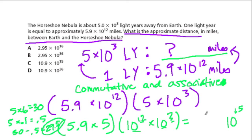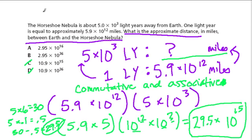So we have 29.5 × 10¹⁵. That's the distance. But notice we don't have that option anywhere here. So it's either going to be A or B, right? C or D. And they want to write this in scientific notation. So what's going to happen?